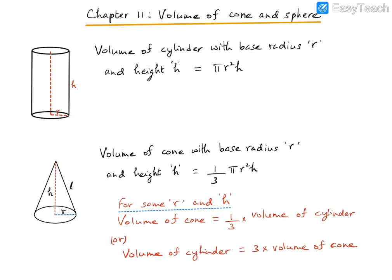Let us start our discussion for volumes by recalling the formula for the volume of a cylinder, which has a base radius r and a height h. The volume of the cylinder is given as πr²h. We want to keep this formula in our discussion because the volume of a cone is related to the volume of the cylinder of the same radius and height.